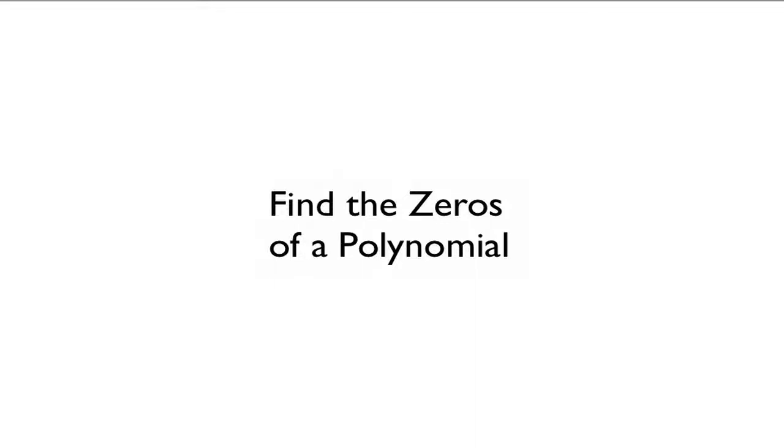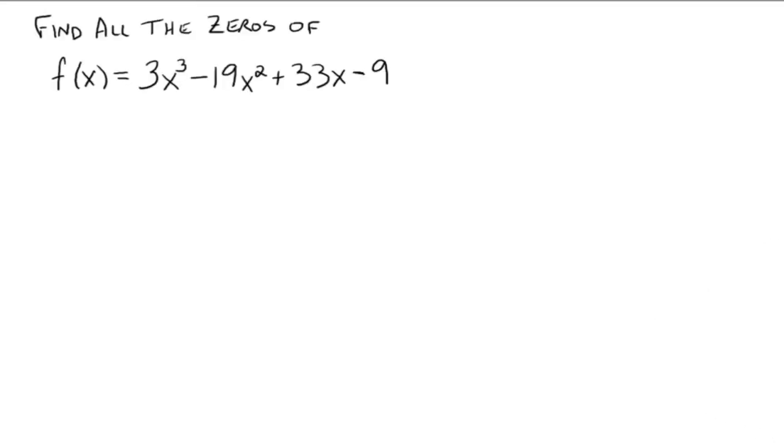Alright, now I just want to do a couple of examples on finding the zeros of a polynomial function. So here's the first one. Find all the zeros of f(x) = 3x³ - 19x² + 33x - 9.